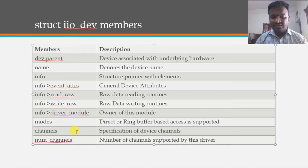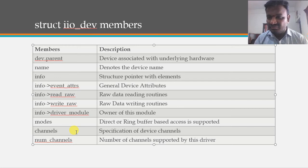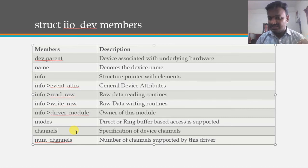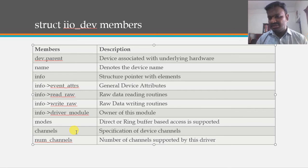The channels member of the iio_dev structure specifies the channel specification for the device, and num_channels gives the number of channels supported. For example, the Udoo Neo has two ADCs each with four channels, so four is specified for num_channels.